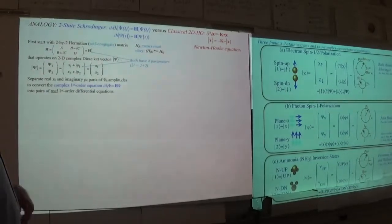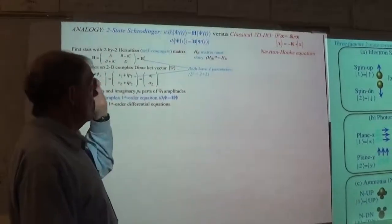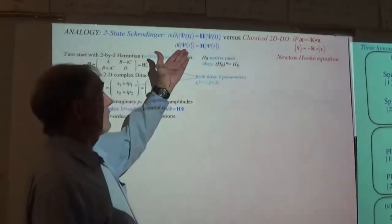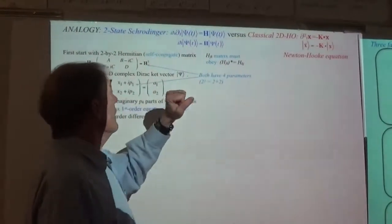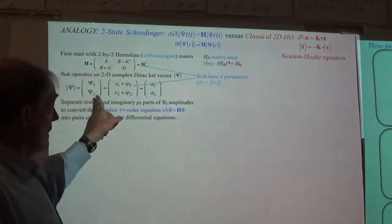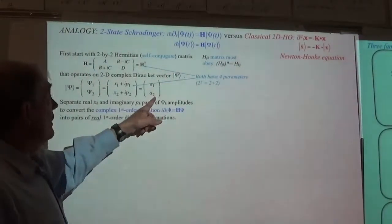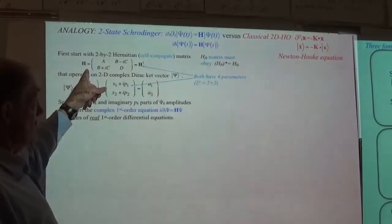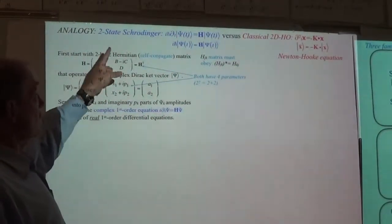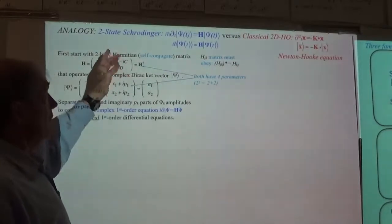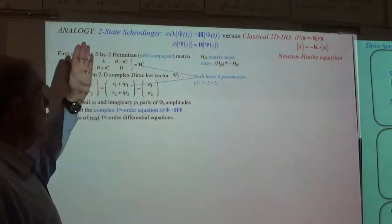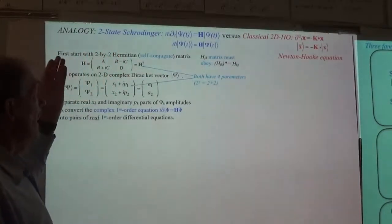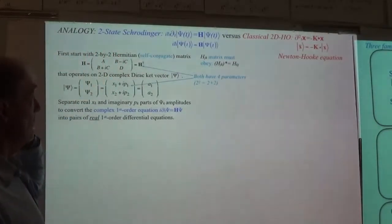We start with the two-state Schrödinger equation written out here with a Hamiltonian that is Hermitian. And if it is Hermitian, it can only have four real parameters.